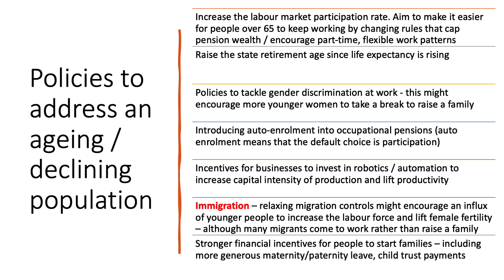Some countries, including the UK, have raised the state retirement age since life expectancy is rising, so people are expected to work longer before they can claim the basic state pension. Policy to tackle gender discrimination at work might encourage more younger women to take a break to raise a family and raise the fertility rate. On the pension side, some governments have introduced auto-enrolment into occupational pensions — the default choice is for a worker and their employer to participate in the pension scheme, aiming to raise private sector pension wealth so that the burden of pension liabilities falls less heavily on the government. An ageing population might lead to shortages of labour, giving businesses greater incentive to invest in robotics, to automate, increase the capital intensity of production, use less labour, and raise productivity.